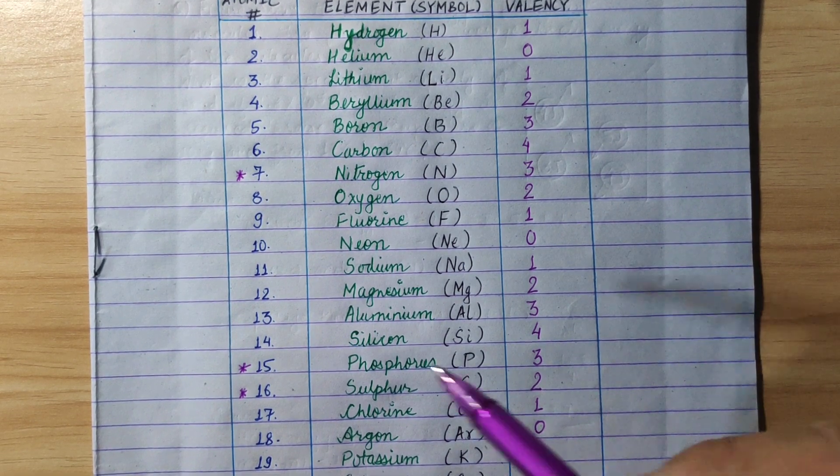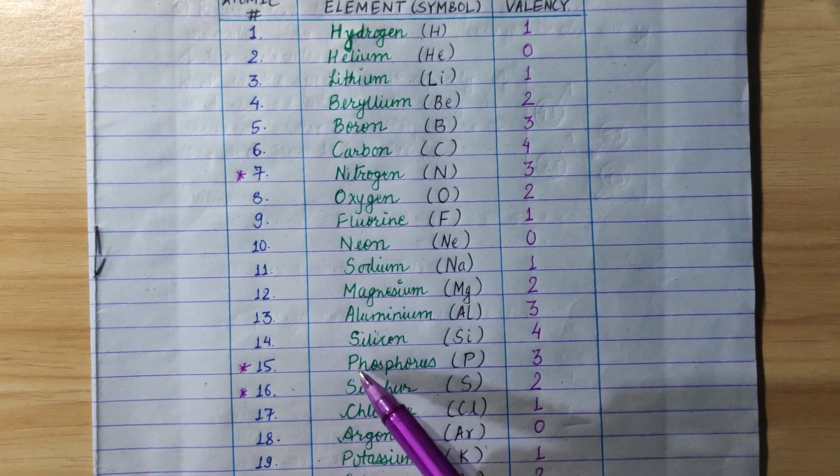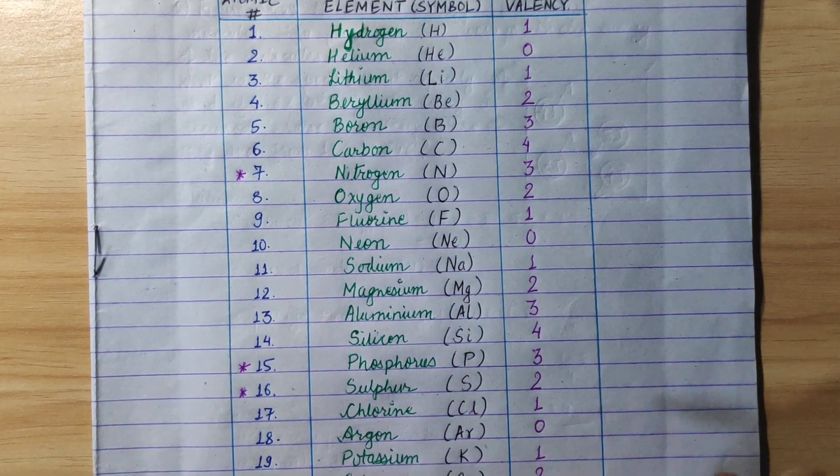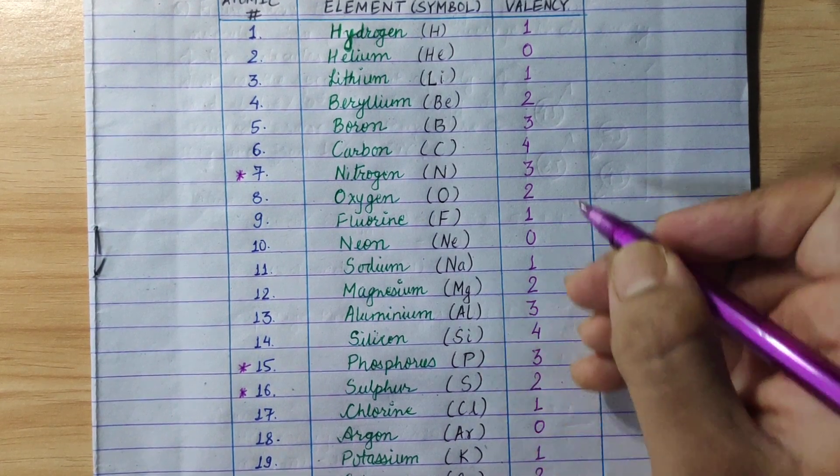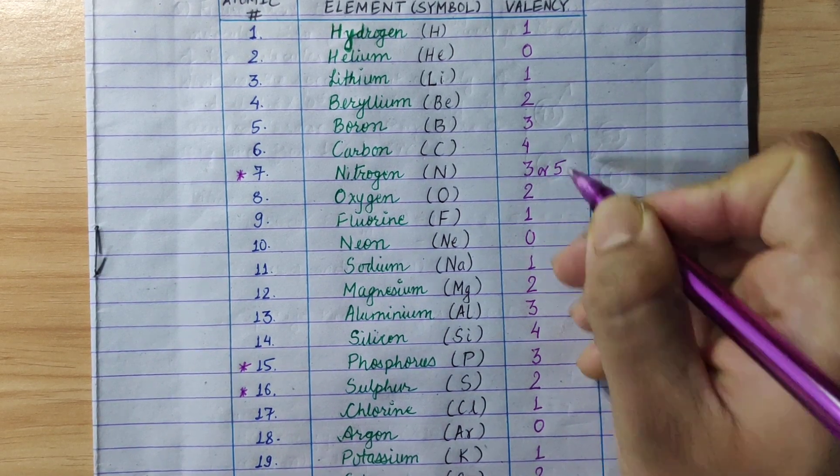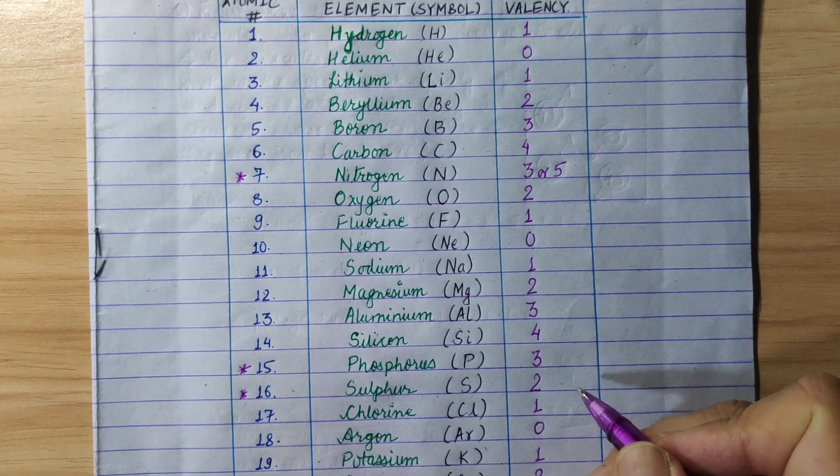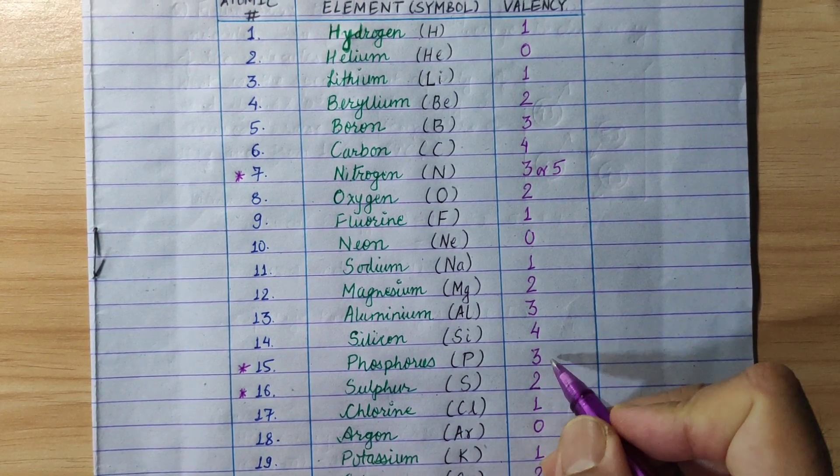Then we mark here 3 elements: nitrogen, phosphorus, and sulfur. What we will do is variable valency. The nitrogen case is 3 or 5. The phosphorus case is 3 or 5.